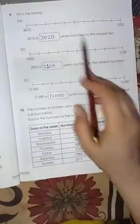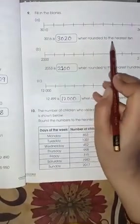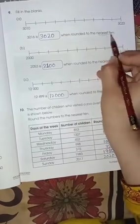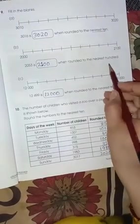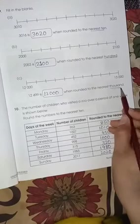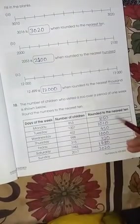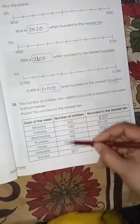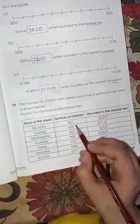Then page number 25, which is fill in the blanks with the round off. Here you have to round off to the nearest 10. Here you have to round off to the nearest 100, and here to 1000. You have to round off all these numbers to the nearest 10.